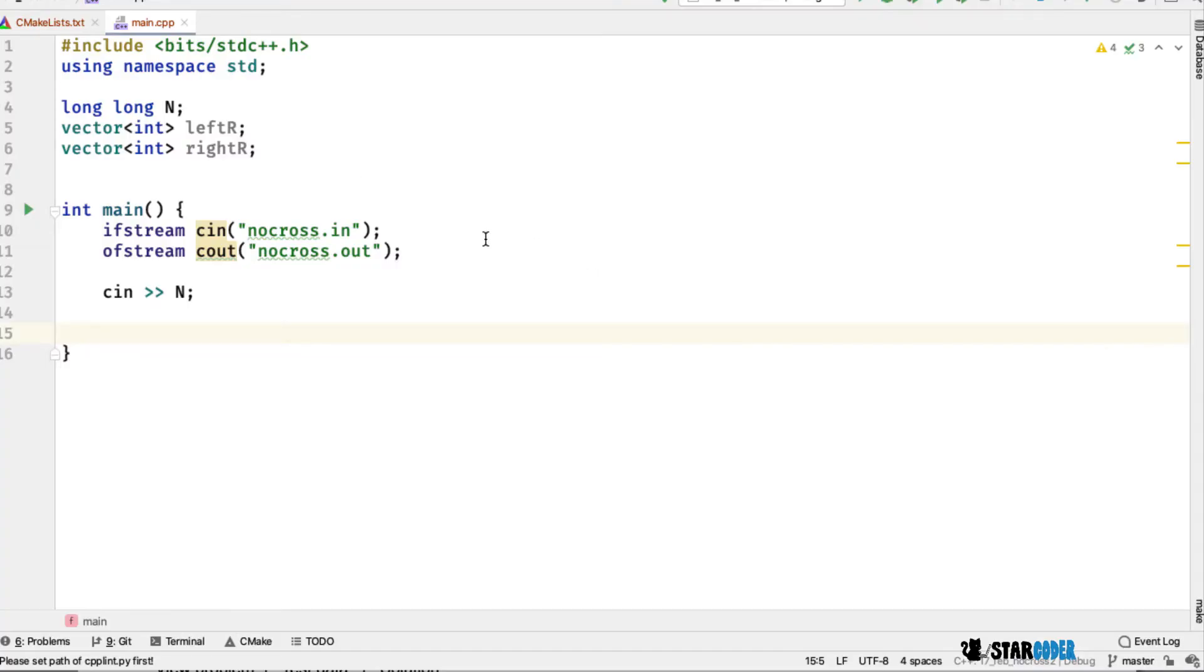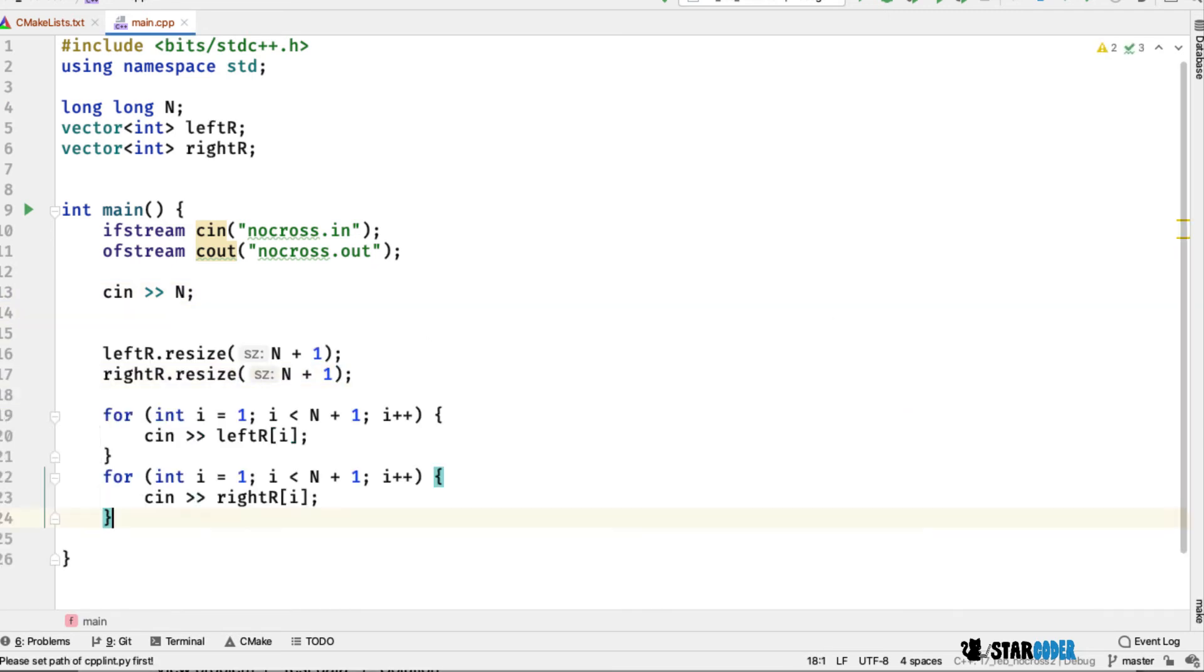First we're going to set up the program. I've created two vectors for the left and right sides. We're going to resize them and then read in the input. I'm going to read them in one-based.